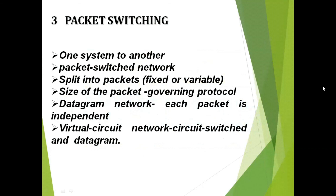Now let's see packet switching. When one system wants to exchange data with another system, the packet-switched network splits the entire data into multiple segments — that is, the entire message is split into multiple packets. The packets may be either fixed size or variable size, depending on the protocol governing the data communication. The protocol defines the rules for data communication. Based on the application protocol or network/data link layer protocol, the entire message is split into multiple packets and exchanged.